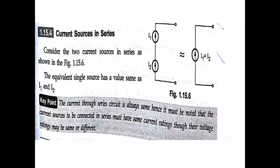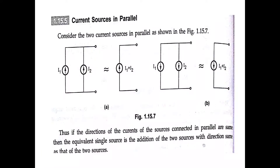For current sources in series: consider two current sources I1 and I2 in the same direction. The current through a series circuit is always the same, so I1 must equal I2. It must be noted that current sources connected in series must have the same current ratings, though their voltage ratings may be same or different.